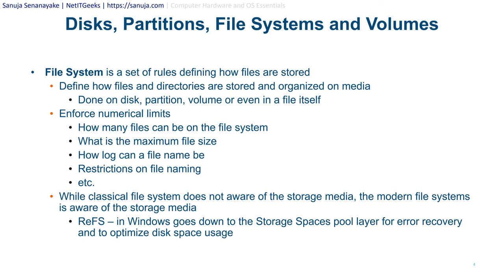A file system is a set of rules defining how files are sorted — it defines how files and directories are stored and organized on the media. You can think of it as: you have a disk, you have partitions created on top, and the file system sits on top of all of that, setting the rules on how files will be stored on that partition. The file system can be applied on the disk, partition, volume, or even the file itself.